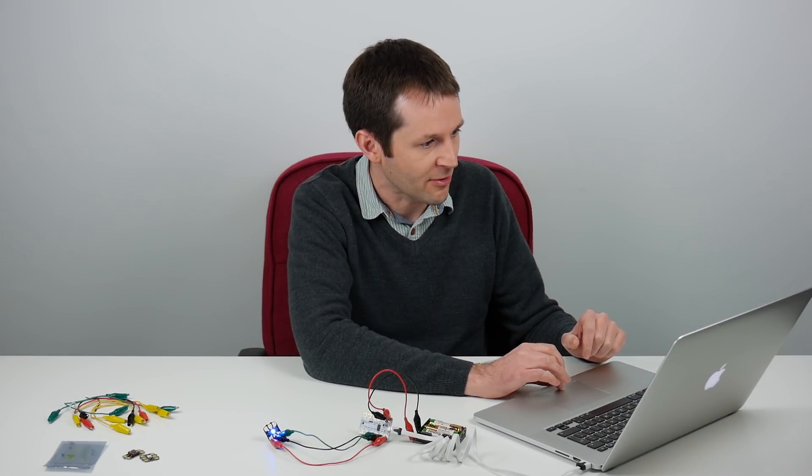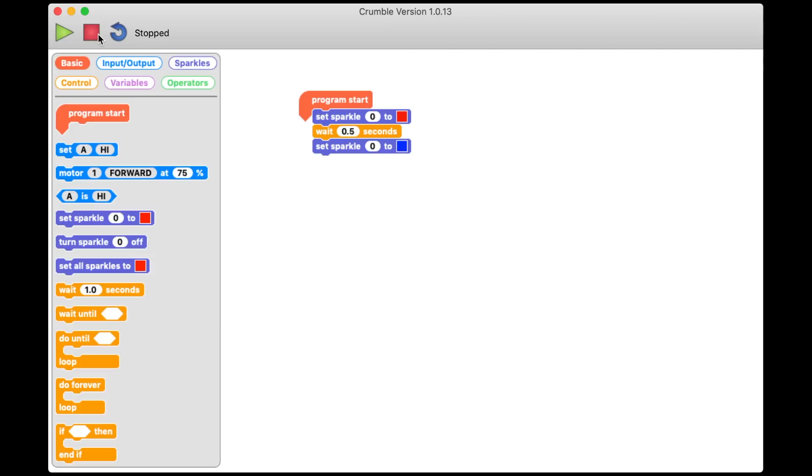I'm going to stop that program and what we want to use now is a construct called a loop so it can repeat those blocks over and over. Down here there's a loop called loop forever. If I drag that right to the top of my program and then put my blocks inside, it will now repeat these commands over and over again.